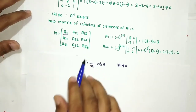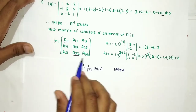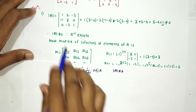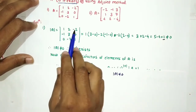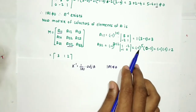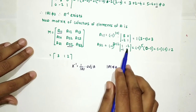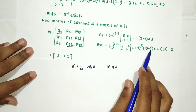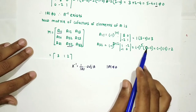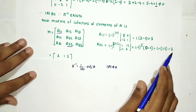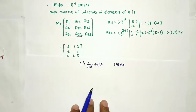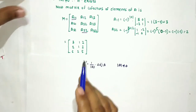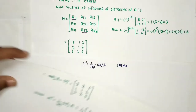Next, cofactor A₃₂ equals (−1)^(3+2) times the determinant after deleting row 3 and column 2, which gives [1×0 − (−1)×(−2)] = 0 − 2 = −2. So we get (−1)^5 × (−2) = (−1)(−2) = 2. In this way we find all entries of the matrix of cofactors. After that, we take its transpose to find the adjoint of A.